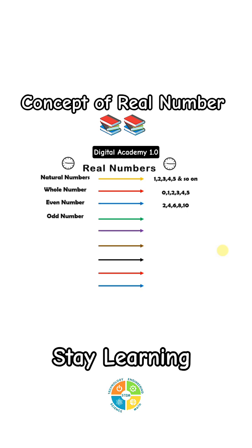Odd number. The numbers which does not completely divide by 2. For example, 1, 3, 5, 7, 9 and so on. Represented by capital letter O.